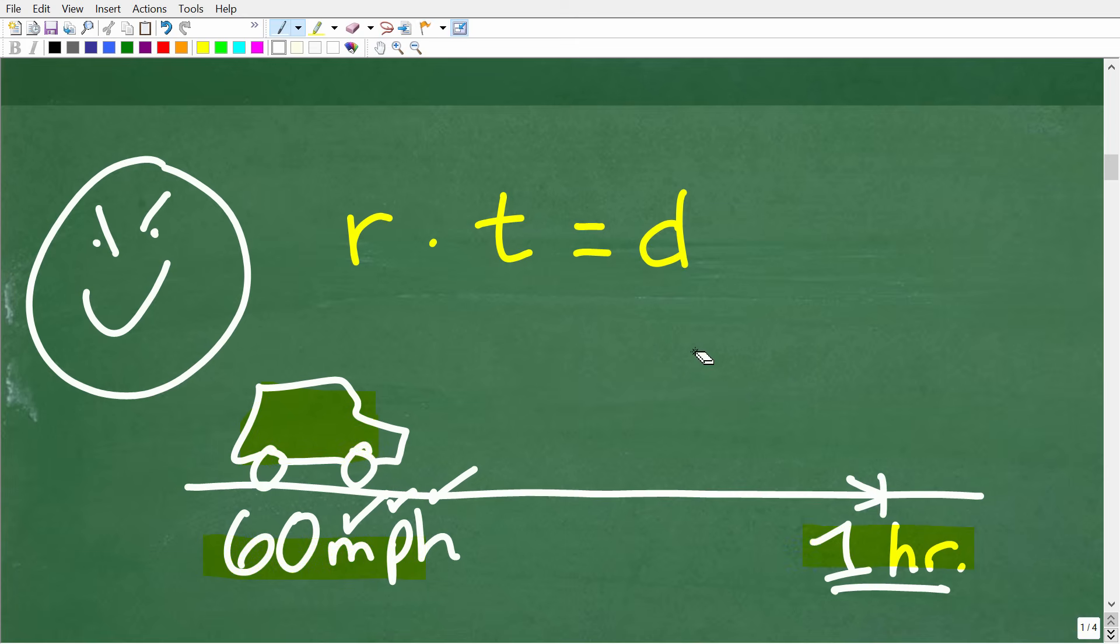But we need to make an important distinction here because the car is going 60 miles per hour. Now, if the car is going 60 miles per hour for one hour, is it actually staying at 60 miles per hour for every second of that trip? Let's think about this for a second. Well, no, in real life, the speed would be fluctuating, right?